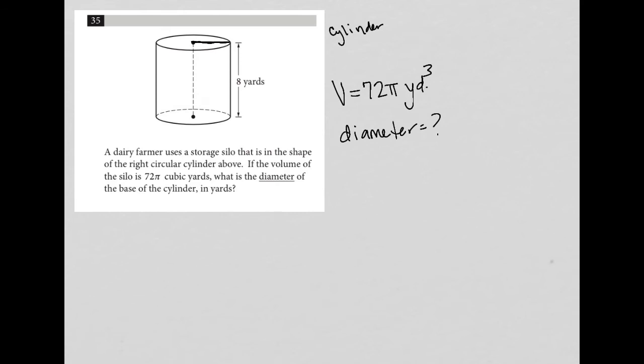What do I know about cylinders? The volume of a cylinder is V = πr²h. We've been told that the volume is 72π. I'll leave the units out for now. From the diagram, I know that the height is eight yards.